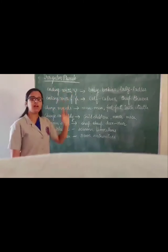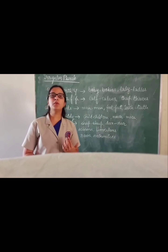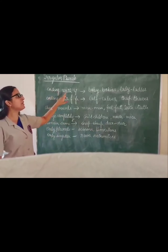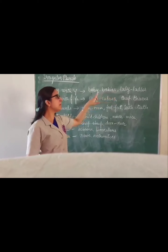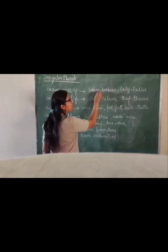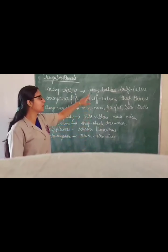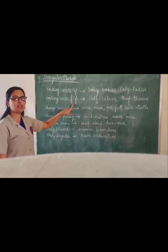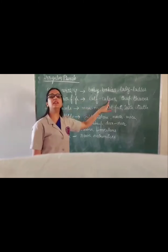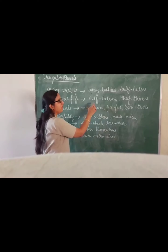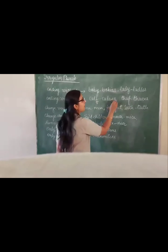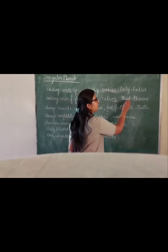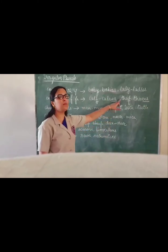Now let's learn about irregular plurals. Nouns which change into plural form by changing their spellings are called irregular plurals. Nouns that end with Y: remove Y and add IES. For example, baby becomes babies, and lady becomes ladies. Some nouns end with F or FE: remove F or FE and add VES. For example, calf becomes calves, and thief becomes thieves.